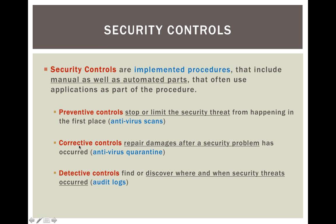The second type of control is corrective — where an incident has occurred and you need to repair the damages. A lot of antivirus software will do this for you if you run a regular check; it will quarantine, meaning separate out the problem, and notify you of additional steps you may need to take. The third type is detective controls, where you continually look at log files so you can detect if something has happened. For example, if you're looking at your audit files, you should be able to detect unwanted intruders such as rootkits that were installed.